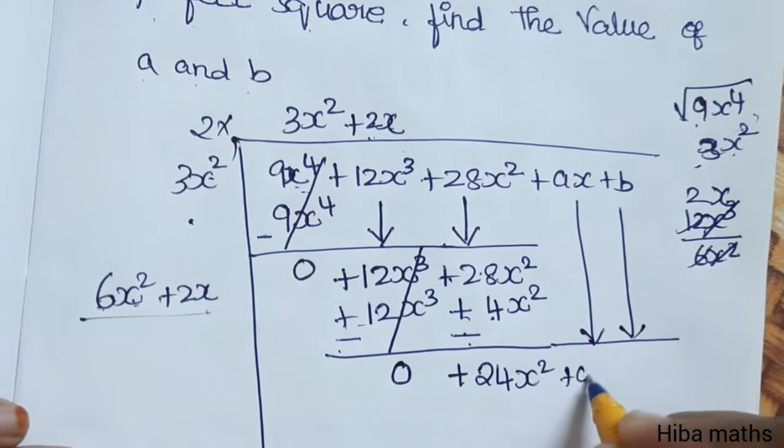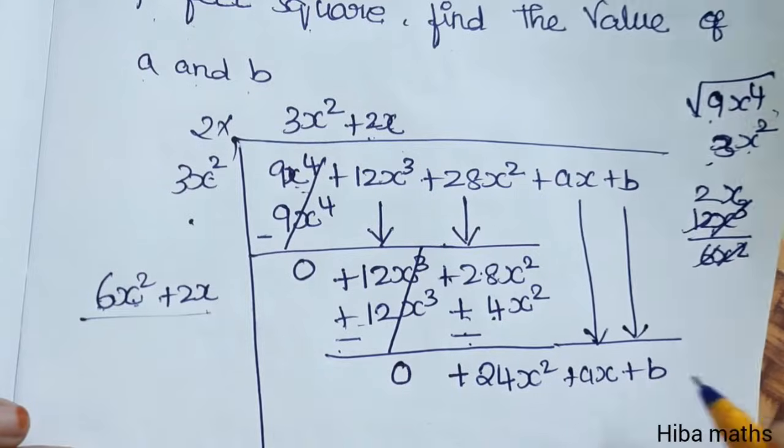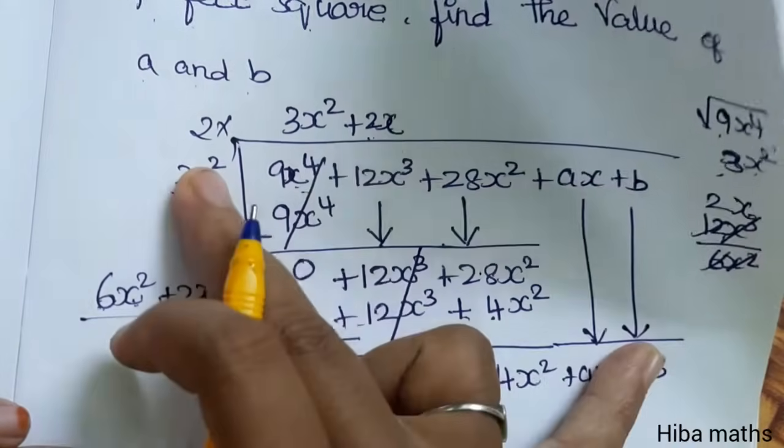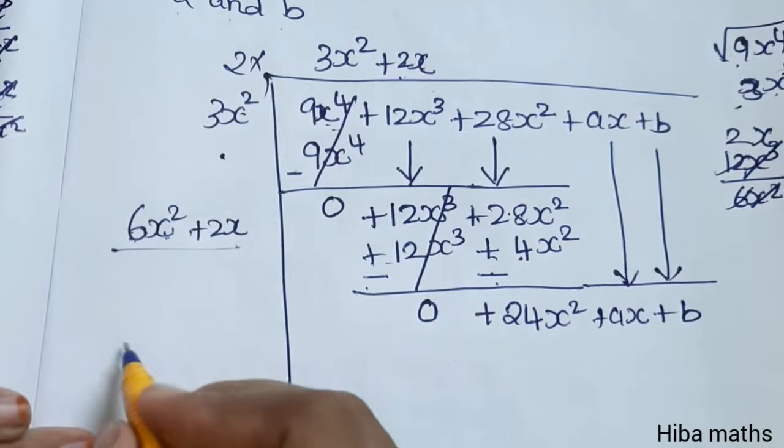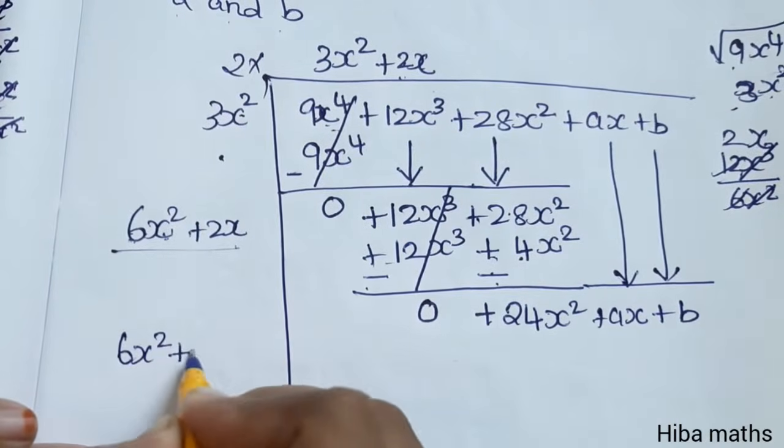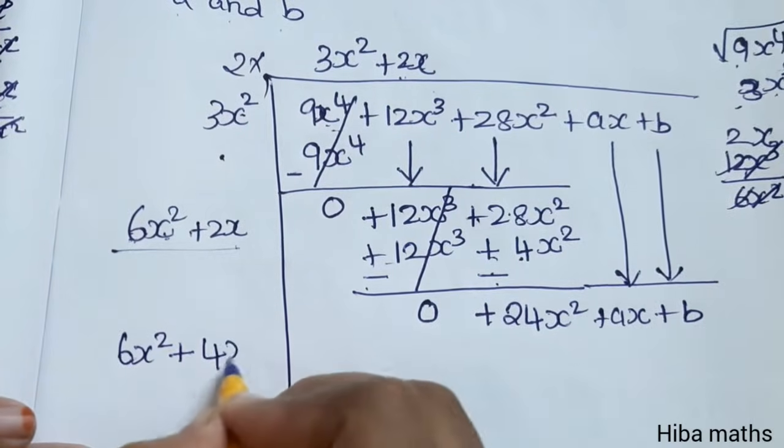Add the two terms, plus ax plus b. Next, put the quotient into 2: 2 times 3x² is 6x², 2 times 2x is 4x.